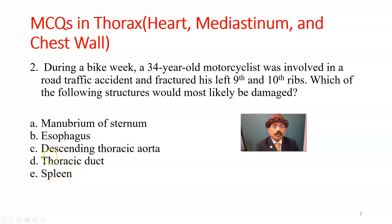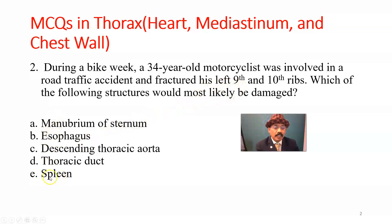What structure is related to these two ribs? It may be partly related to rib number 11 also. The 9th, 10th, and partly 11th ribs relate to the spleen. The answer is E, spleen.